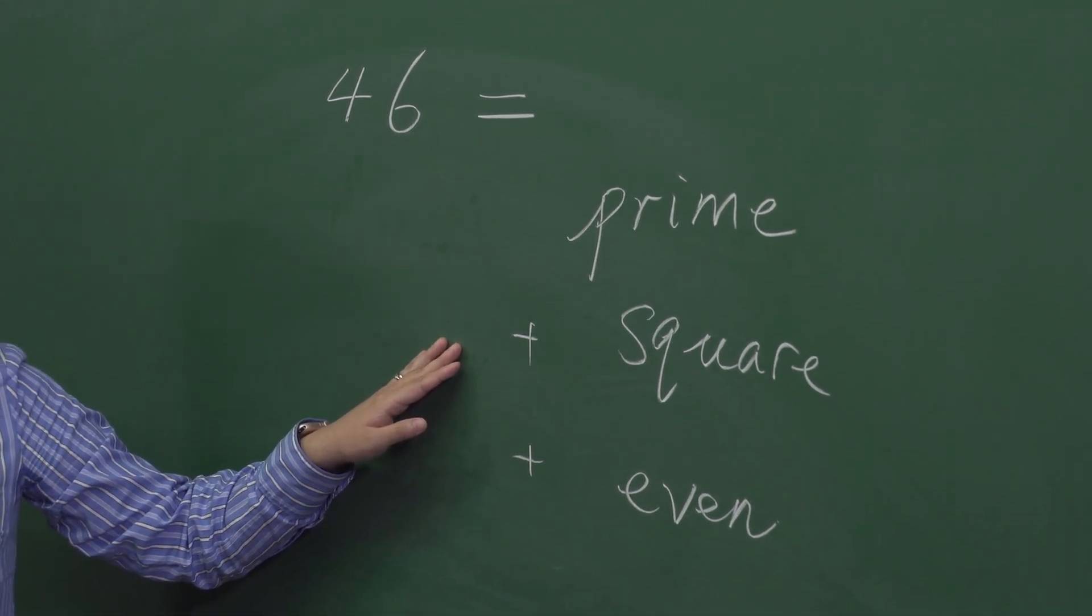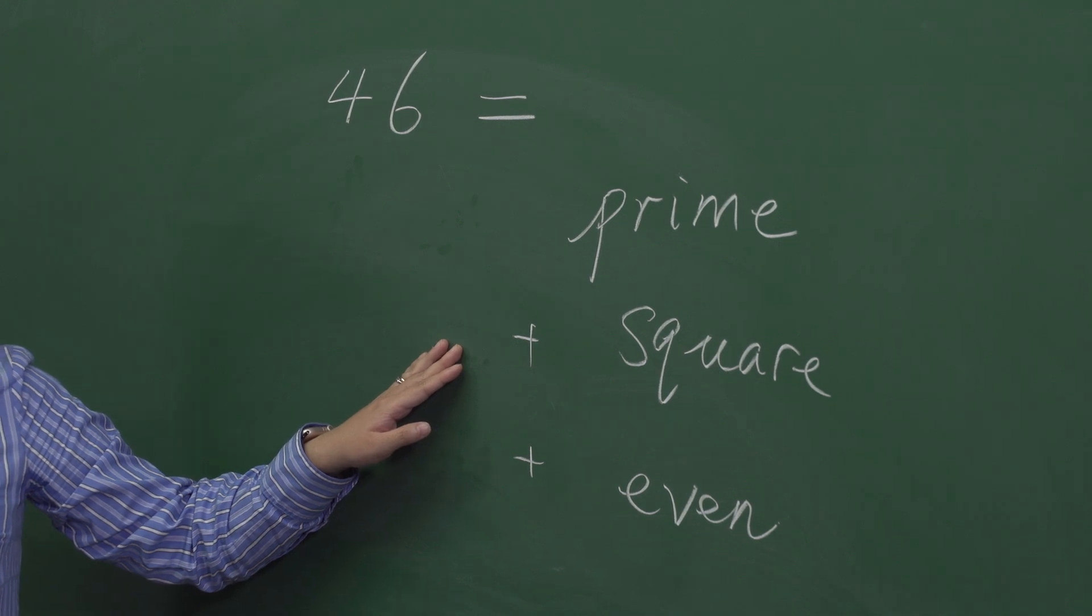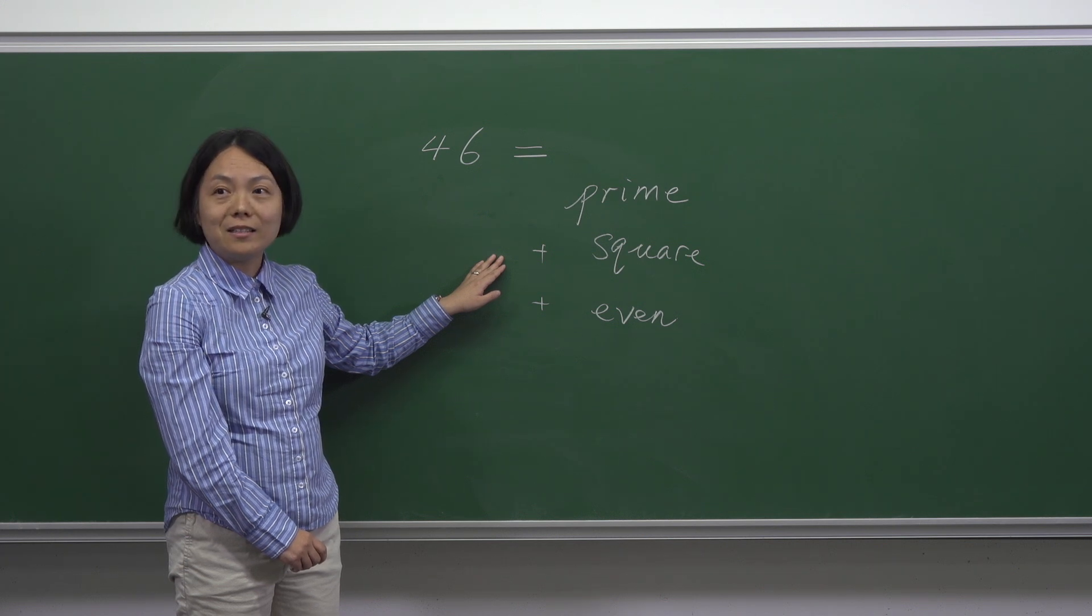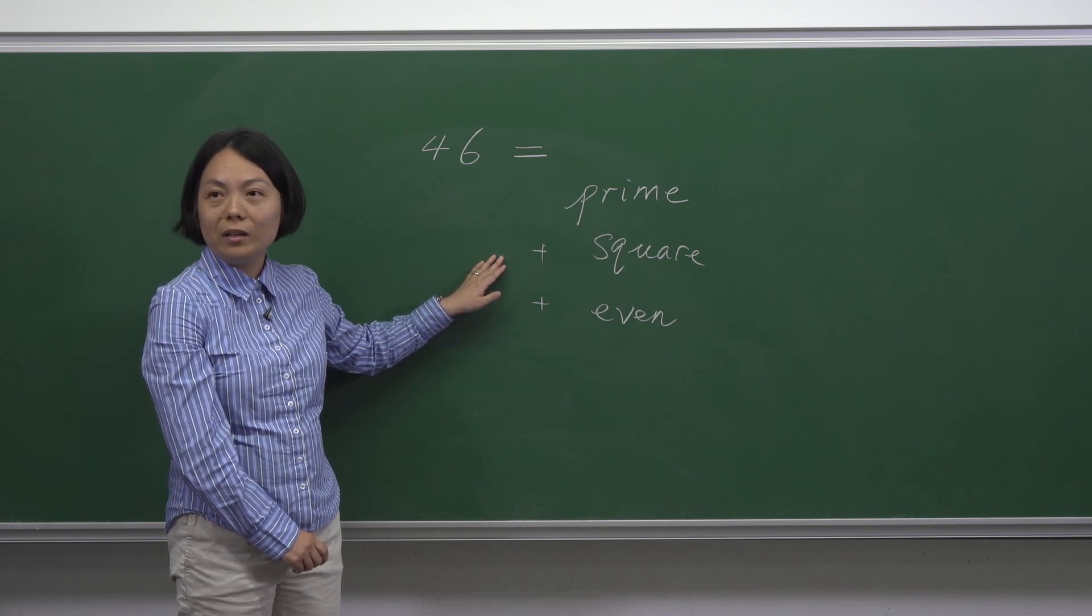And we're looking for some odd square number less than 46. And it has to be two-digit as well. And that means this square number is 25.